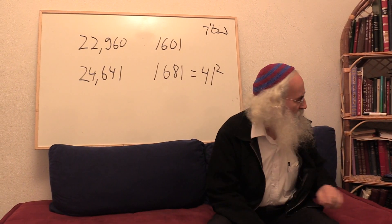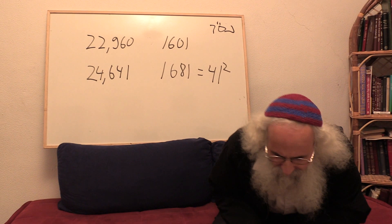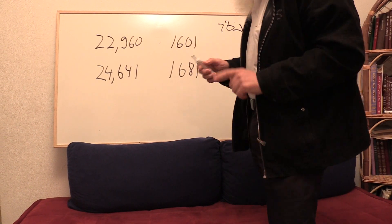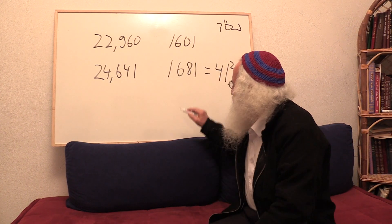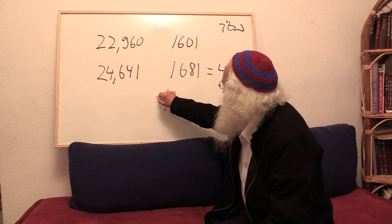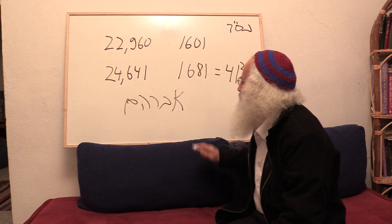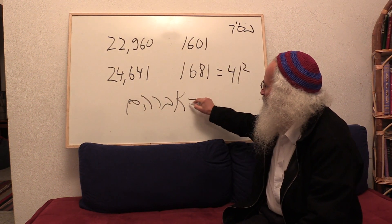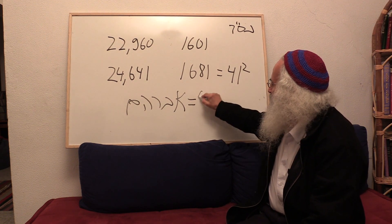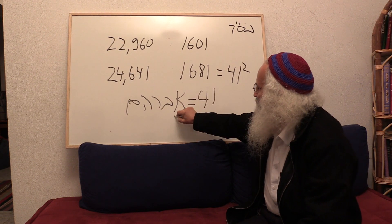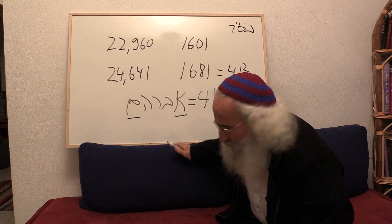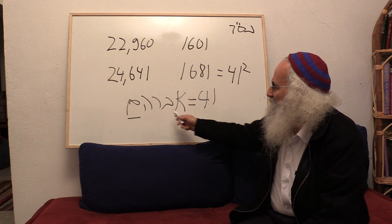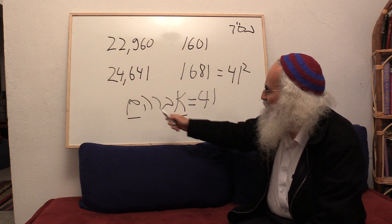Just a few more details about everything we just talked about. First of all, about the name Avraham — that everything starts from it. Avraham, in ordinal number, equals 41. And this is the first letter and the last letter of Avraham that correspond to Eldad, Meidad, Eliyahu, Mashiach, etc.